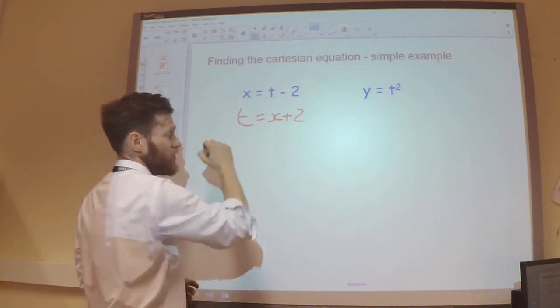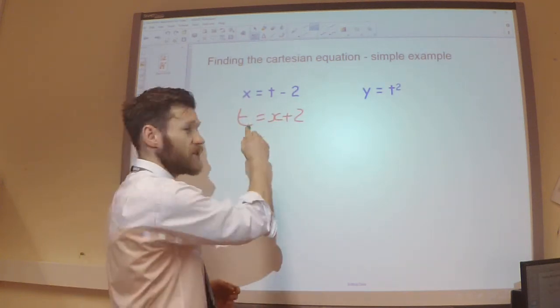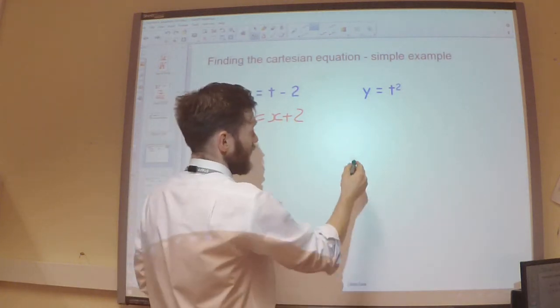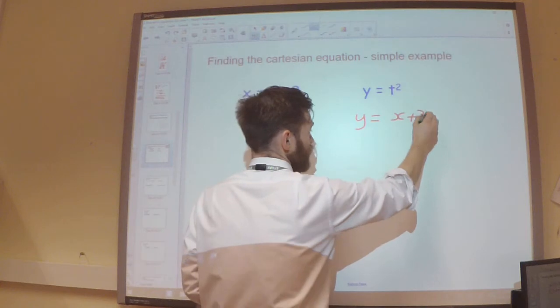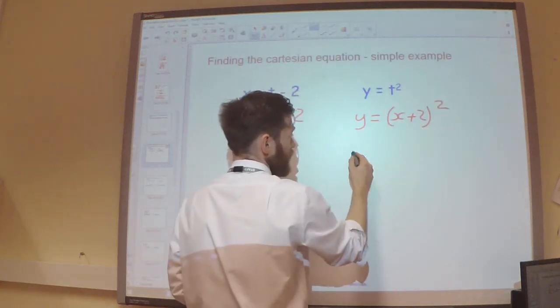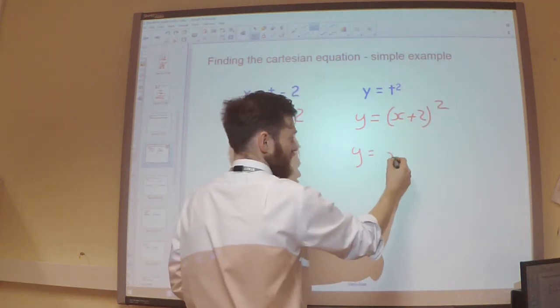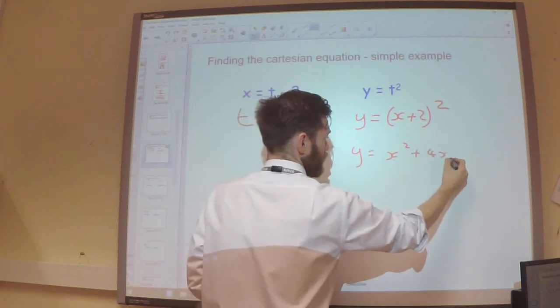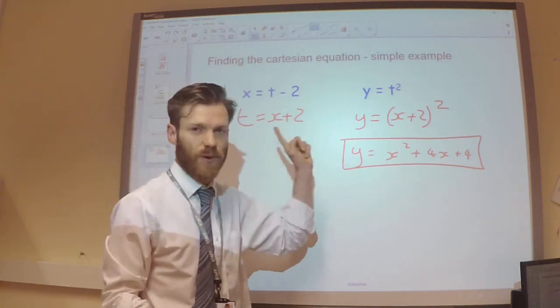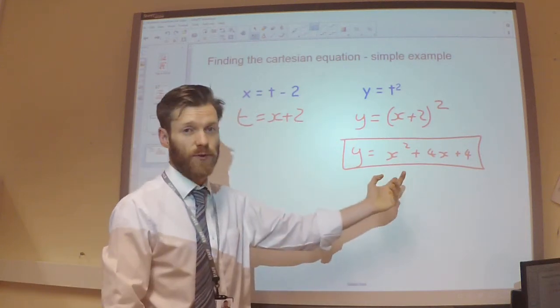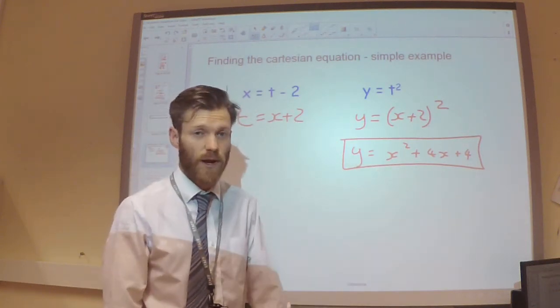So I'd add the 2 to both sides and then I would substitute this in over here, so I would get y equals x plus 2 all squared and then I could expand this out. I've expressed these parametric equations in Cartesian form as it's only in terms of x and y.